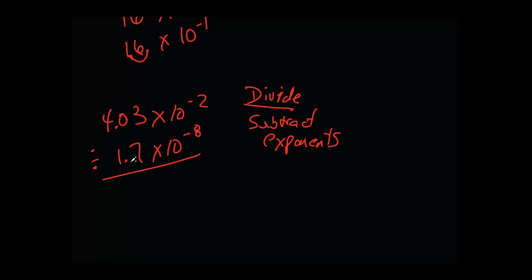4.03 divided by 1.7. I know that my answer is going to have to have two significant figures because of the rules of dividing significant figures. If I divide 4.03 divided by 1.7, I get 2.370588, and I'm going to round that to 2.4.